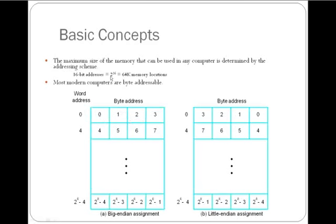For example, if I am using a 32-bit computer, each word size is 32 bits. In those total 32 bits, we have 4 bytes, and 4 bytes consist of 4 addresses. The processor must and surely takes data in the form of words. If the processor wants to access data from the first byte, it directly selects the entire word — that is bytes 0, 1, 2, 3.